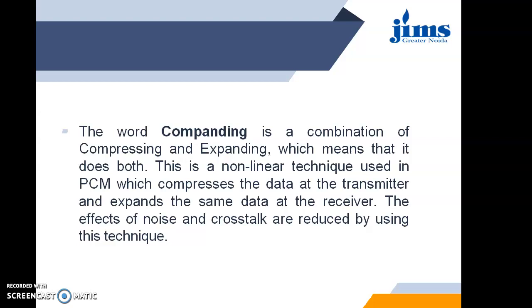If the signal is very high, we compress the amplitude and pass it through a uniform quantizer so that the error percentage is low, then expand it by the same magnitude by which it was compressed. Similarly, if the signal is of low amplitude, it is expanded first, passed through a uniform quantizer, and finally compressed by the same magnitude. This reduces the problem of noise or crosstalk.